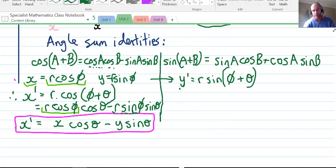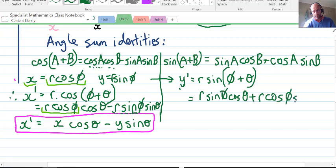At this stage, using the diagram above, we can also work out y', and that's r sin(φ+θ). Using our sine angle sum identity, we can expand that out.